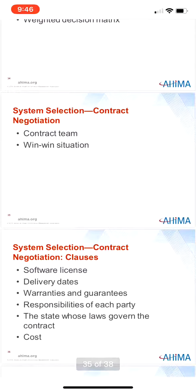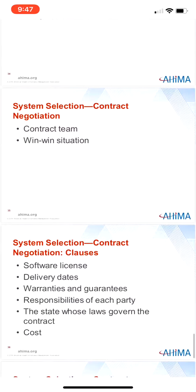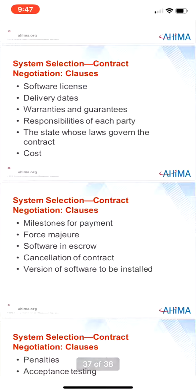Step four is contract negotiation. Once the decision of which information system to purchase has been made, the contract negotiation process begins. Some healthcare facilities start negotiations with more than one vendor, then choose one vendor to continue with. Typically a contract team — not the project team — negotiates the contract; the negotiating team should include at least the CIO and an attorney. Contract clauses will cover: software licenses, delivery dates, warranties and guarantees, the responsibilities of each party, the state whose law governs the contract, the cost, milestones for payment, force majeure, software in escrow, cancellation of contract, version of software to be installed, penalties, acceptance testing, maintenance updates, and training and documentation.